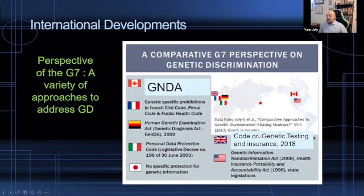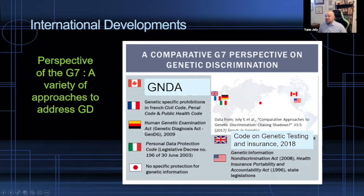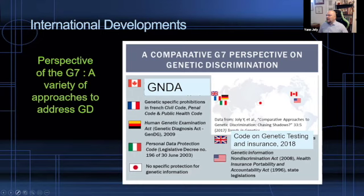The United Kingdom has decided to proceed through non-legal policies — the Code on Genetic Testing and Insurance — which is a flexible approach that can be updated depending on the progress of genetics and its implications for the insurance industry. The US has really a mix-and-match approach where some fields are well protected, like health insurance and employment, but life insurance varies from state to state. Japan has decided not to specifically address genetics in law; they do speak about it in their privacy law but do not necessarily prohibit genetic discrimination, although there have been discussions about doing so.